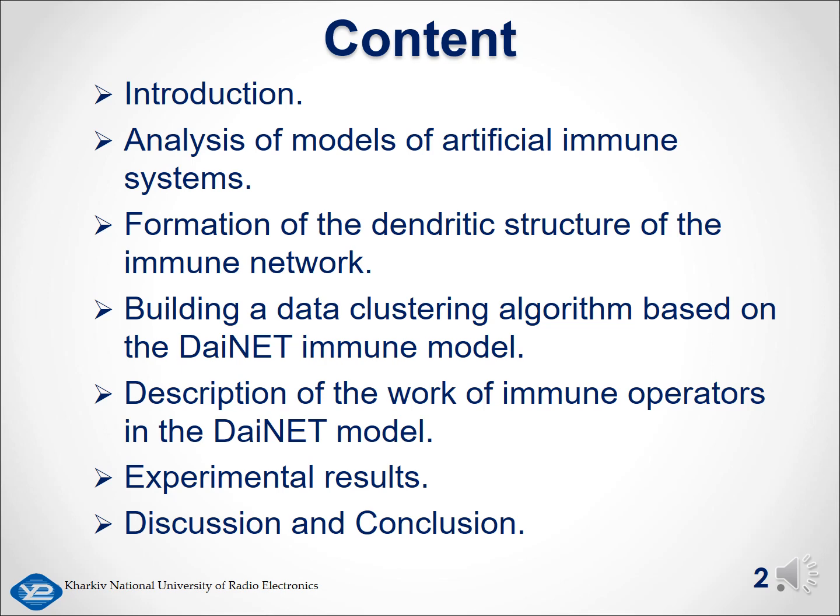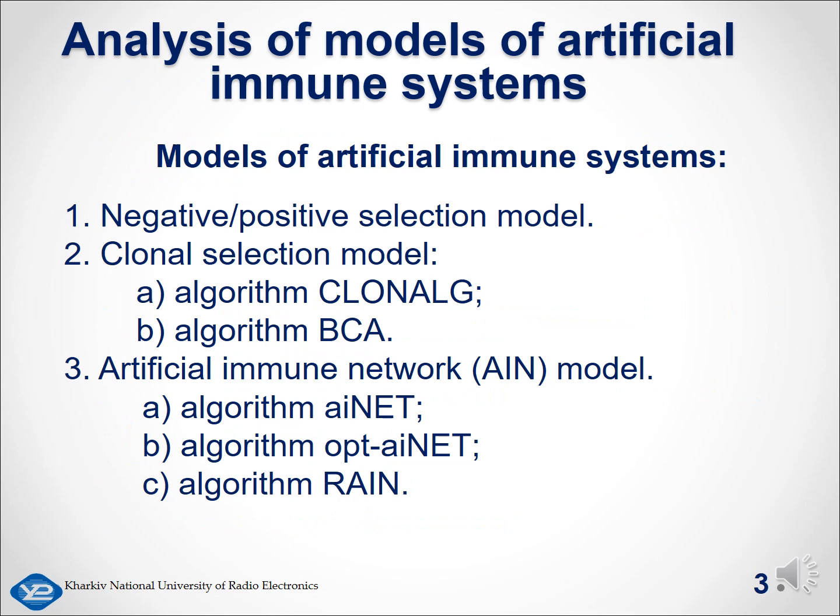The content of the work is given on this slide. The theory of artificial immune systems is one of the directions in the organization of artificial intelligence systems. To date, there are several common artificial immune system models shown on this slide, which are used to solve various practical problems: (a) negative/positive selection model, (b) clonal selection model, (c) artificial immune network model. These models differ from each other in the ways of editing the antibody populations, ways of organizing immune operations, and the possibilities of interaction between immune objects.